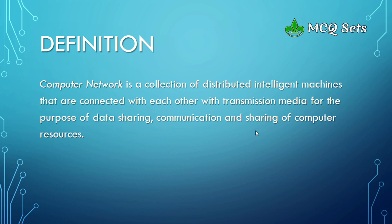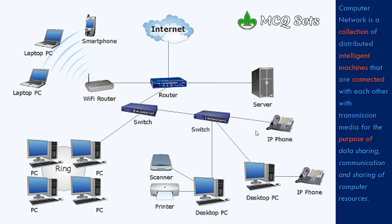Looking at this image, you can see various devices — smartphones, tablets, PCs, servers, desktop PCs, IP phones, routers, switches, and wireless routers. All these are intelligent machines. They are connected with each other — the solid lines indicate wired connections using cables, and the wave lines indicate wireless connections. Whether they use wired or wireless connection, when connected with each other they form a network.